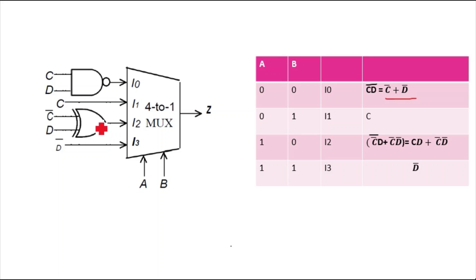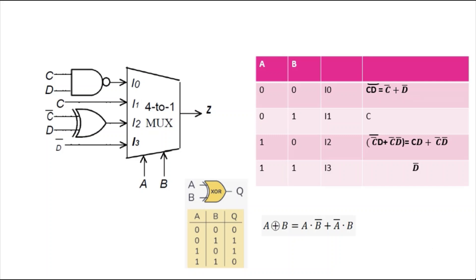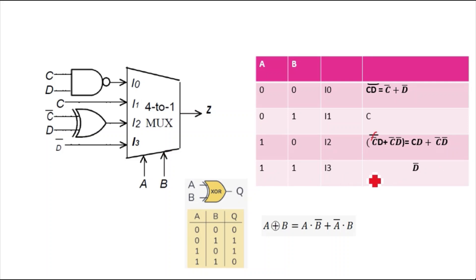I2 uses an XOR gate. If you complement one input of an XOR, you get the function of an XNOR. Here C-bar and D are the inputs. The XOR function is A·B-bar plus A-bar·B. Substituting A = C-bar: (C-bar-whole-bar)·D plus C-bar·D-bar = C·D plus C-bar·D-bar. The double bars cancel out.